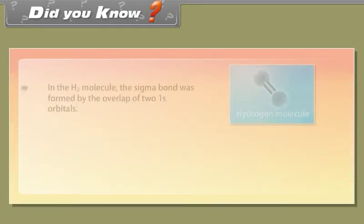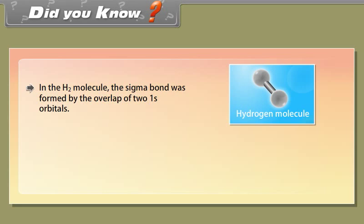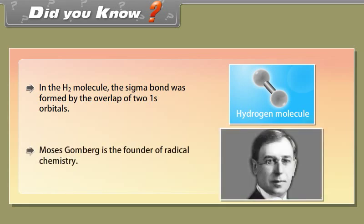Did you know? In the hydrogen molecule, the sigma bond was formed by the overlap of two 1s orbitals. Moses Gomberg is the founder of radical chemistry.